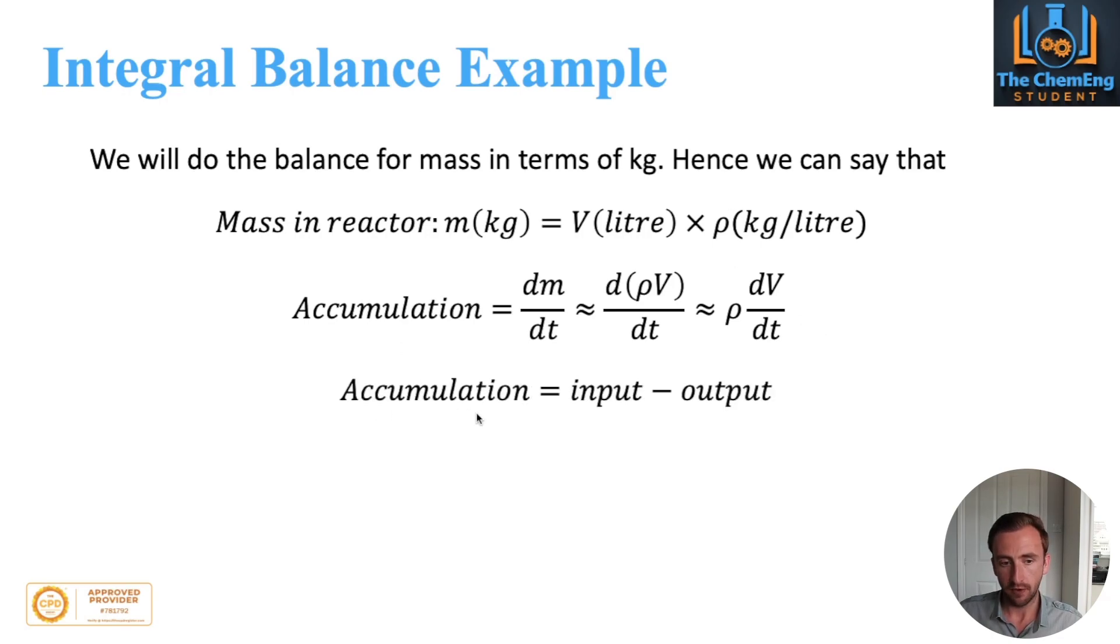We explain this in greater detail in the previous tutorial. But from here, we have our accumulation is equal to our input minus output, and therefore we can say that our accumulation is denoted by rho dv over dt, so that's here.